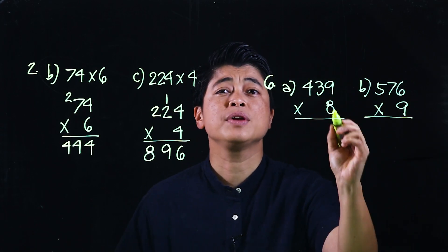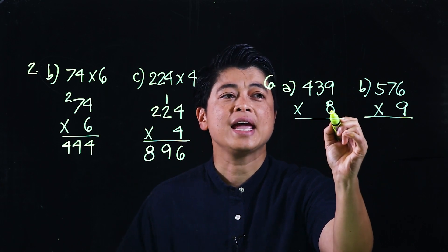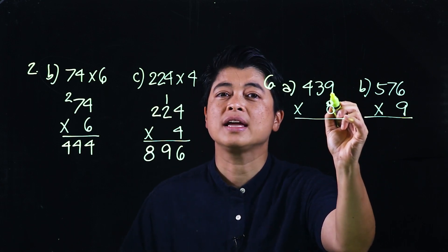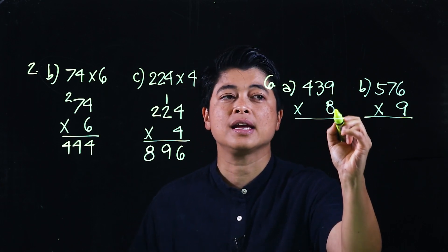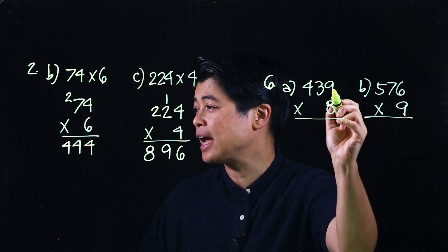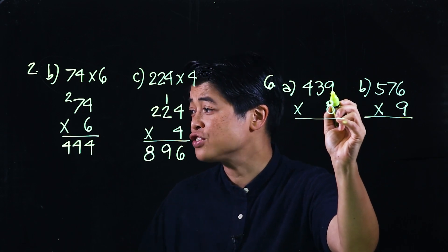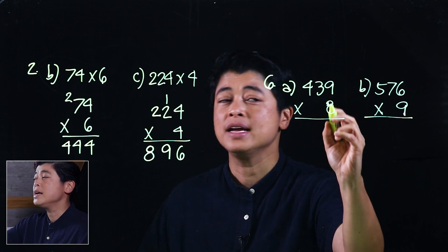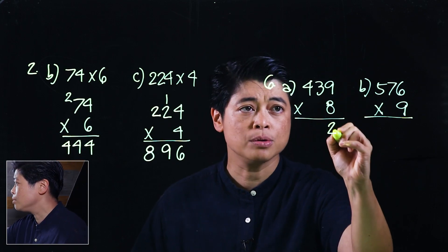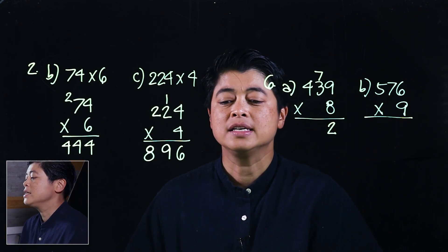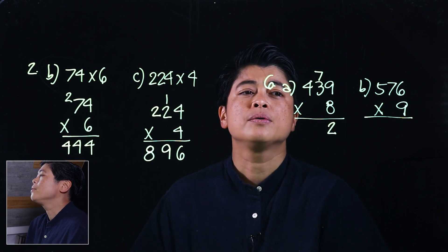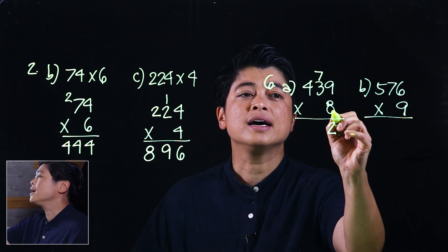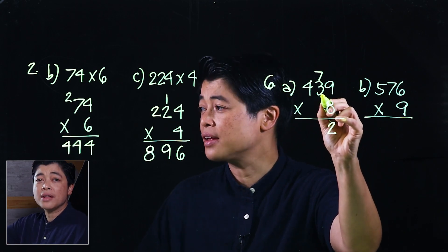When we multiply we take 8 times 9. Again, if they do finger counting they can count either by 8 or by 9, or if they've been doing flashcards then that means this should be 72. We put a 2 and we carry the 7.